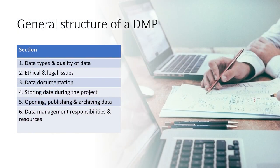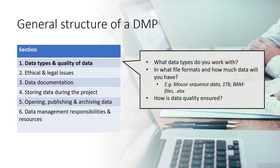This is a list of sections that a generic DMP includes. They can be in a different order, but the content remains more or less the same. In the first part, you list and describe the data types you work with. Do you, for instance, collect, produce, or reuse data? You need to specify data formats and estimate how much data there will be. Additionally, you should also think about how data quality is ensured.